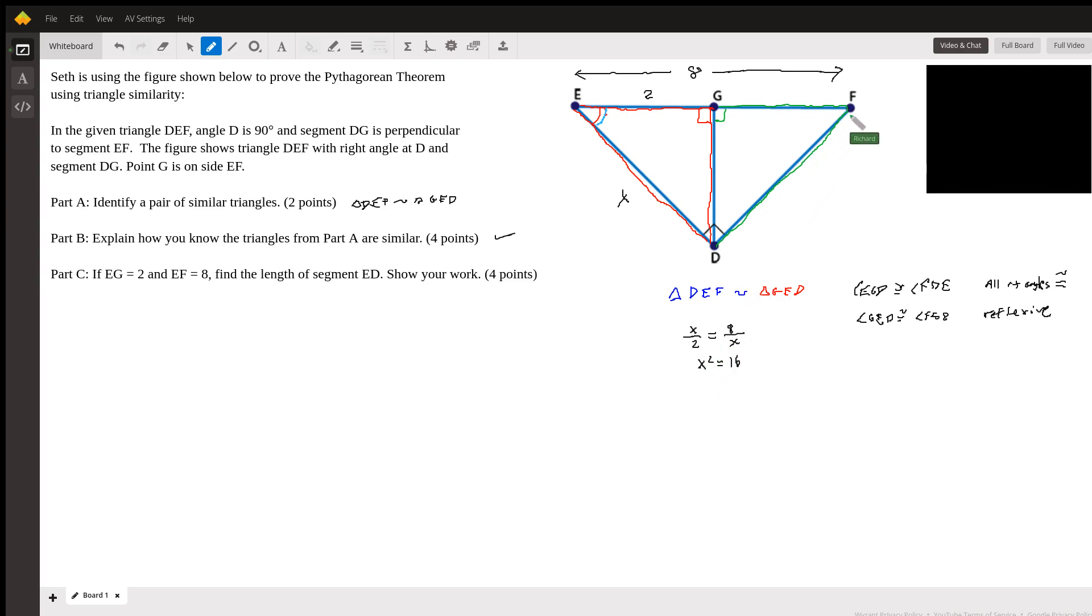And I think using the same logic, you can see that triangle GFD is similar to triangle—now G corresponds to this right angle here, D. And then F corresponds to itself. So G corresponds with D in the blue triangle, F corresponds with F in the blue triangle, and so D has to correspond with E.